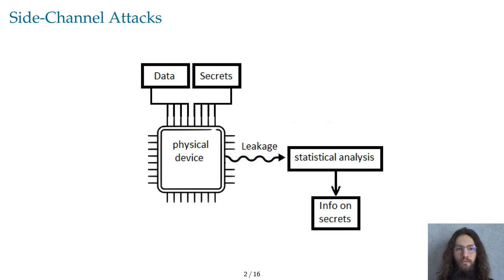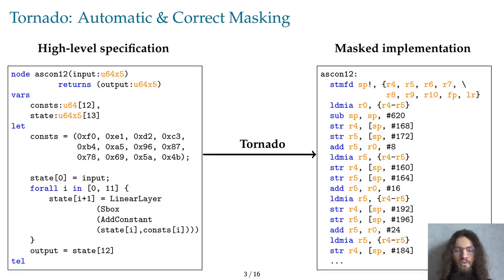and the other is to make sure the leakage is uncorrelated with the secret data. Masking is a common countermeasure of the latter category. In this talk, we will present Tornado, a tool to generate masked implementations from high-level specifications.